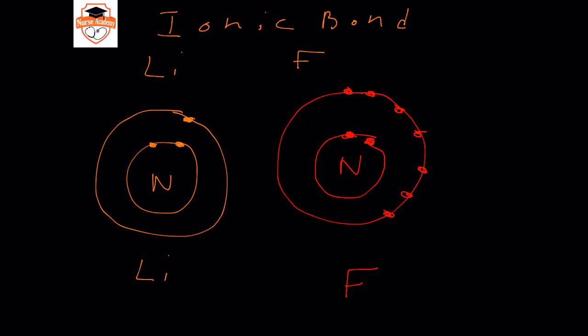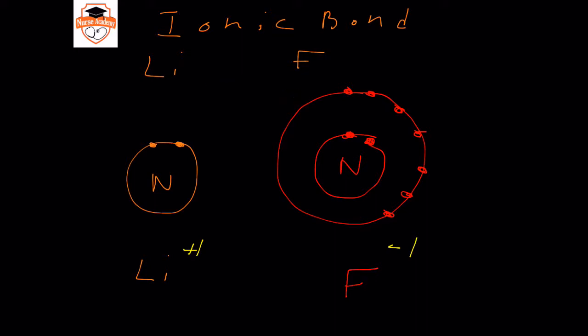Because fluorine is one square away from having a complete valence shell — remember, a complete valence shell is eight valence electrons for everything except hydrogen and helium — what's going to happen is that in order for lithium to form lithium plus one and fluorine to form fluoride negative one, one of the electrons from the lithium is going to go over to the fluorine, so that we end up with a lithium plus one ion and a fluorine with eight valence electrons instead of seven.